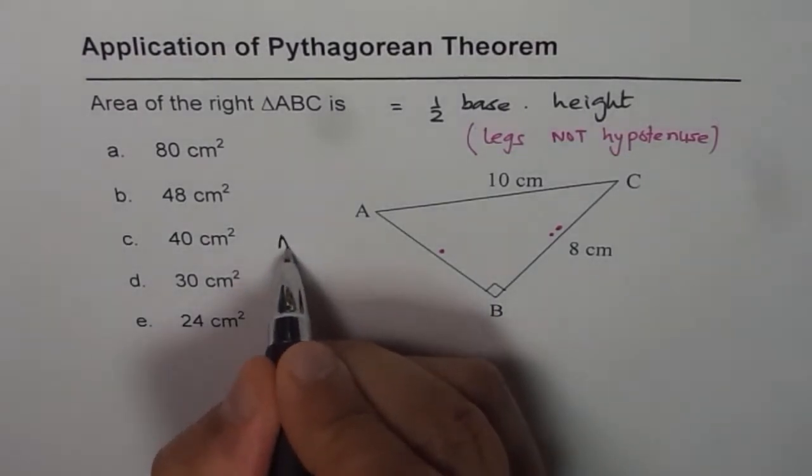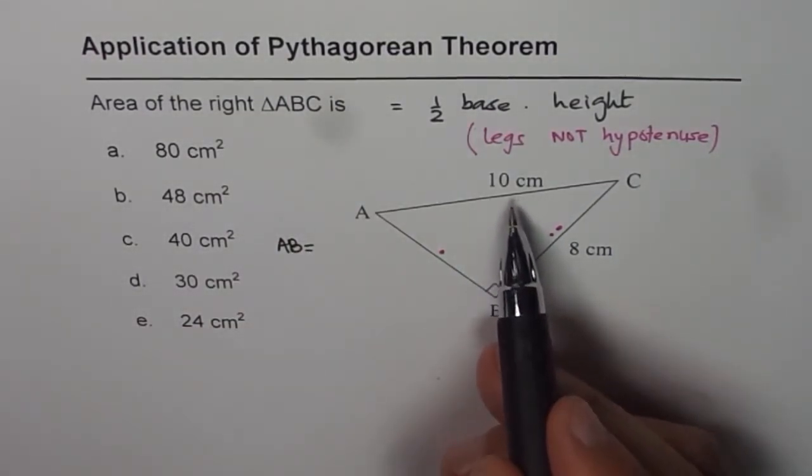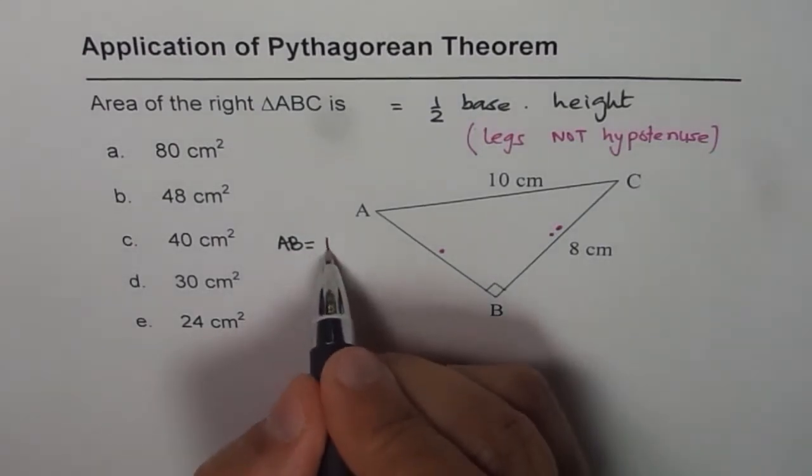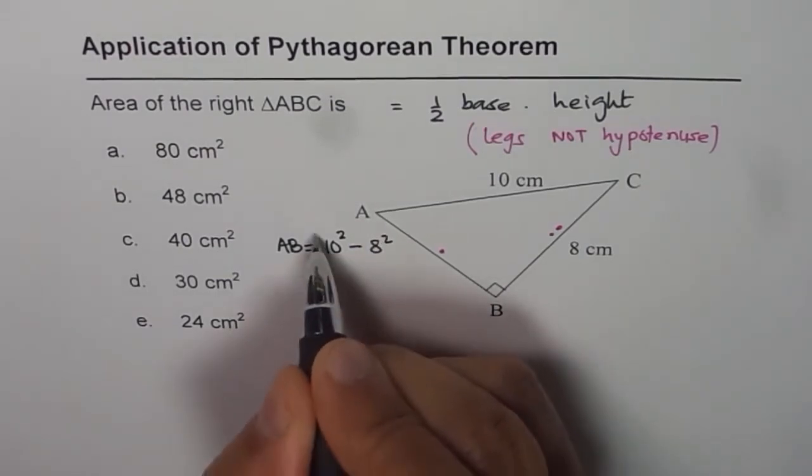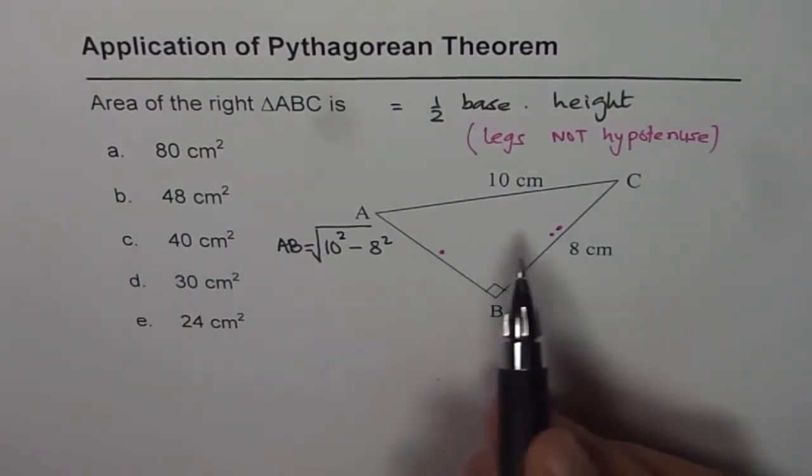So what is AB equal to? AB is not the hypotenuse; it is the shortest side. Using Pythagorean theorem it should be square root of 10 squared minus 8 squared. Our logic is that since it is not the longest side, we find the difference of squares.